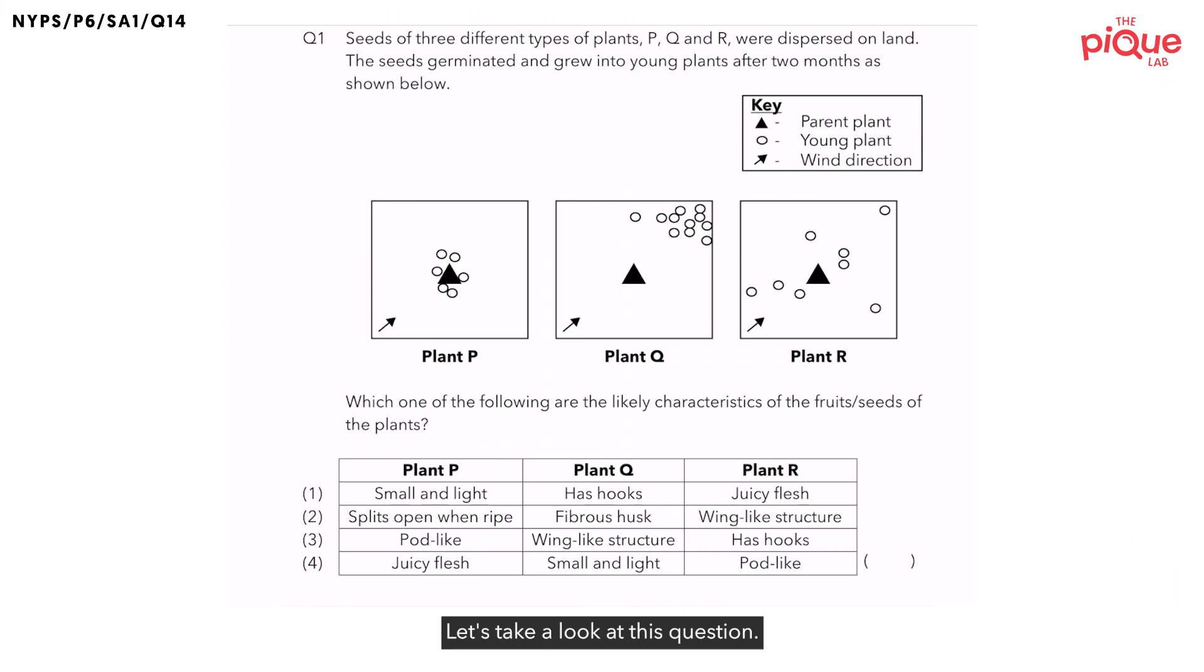Let's take a look at this question. There are three different types of plant, P, Q, and R, and they disperse their fruits on land as shown in these three diagrams here. The seeds germinated and grew into young plants. The triangle represents the parent plant, while the circle represents the dispersed fruit or seeds which then grew into young plants.